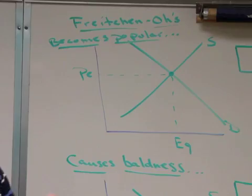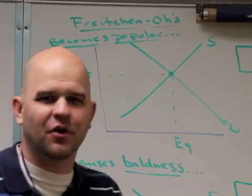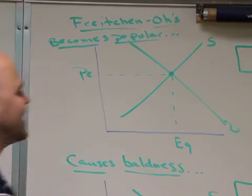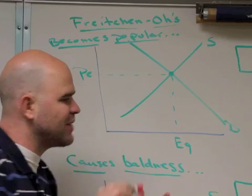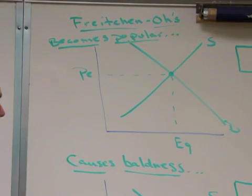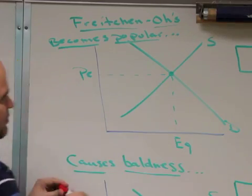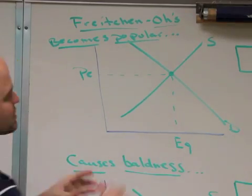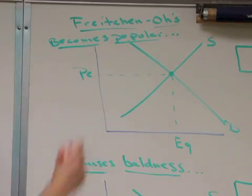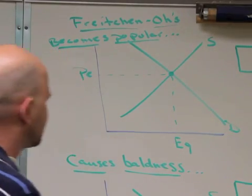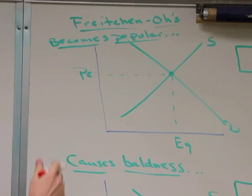So, supply and demand. Hopefully you already know the basics about supply and demand — that supply is upward sloping, demand is downward sloping. Tracing down, we have our equilibrium quantity. Tracing to the side, we have the price equilibrium, basically the price that producers and consumers agree on.